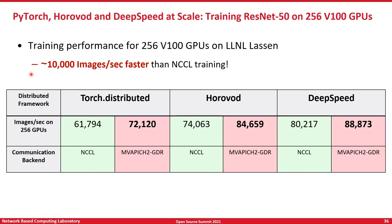Here we show more numbers on using PyTorch with Horovod and DeepSpeed at scale for training ResNet-50 on 256 V100 GPUs. The training performance on Lassen was close to 10,000 images per second faster than NCCL-based training. Looking at multiple communication substrates that PyTorch can use — Torch Distributed, Horovod, and DeepSpeed — for all the different communication substrates, MVAPICH2-GDR is able to significantly outperform NVIDIA's collective communication layer.